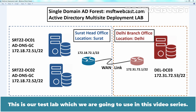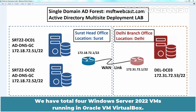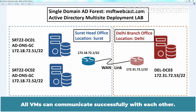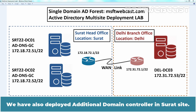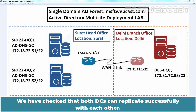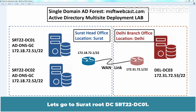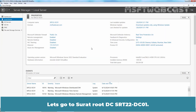This is our test lab which we are going to use in this video series. We have a total of 4 Windows Server 2022 VMs running in Oracle VM VirtualBox. All VMs can communicate successfully with each other. In the previous video, we created the Surat head office site and associated subnet. We also deployed an additional domain controller in Surat's site and verified that both DCs can replicate successfully. Let's go to Surat root DC srt22-dc01.